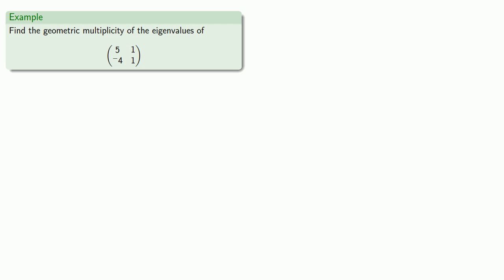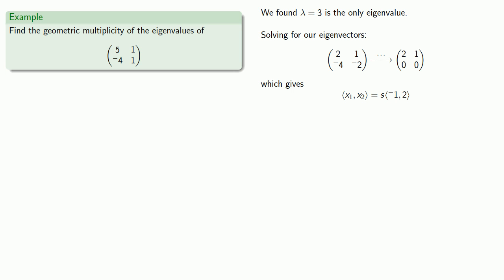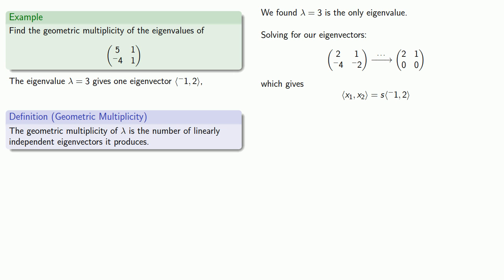Let's consider the geometric multiplicity of the eigenvalues of our matrix. We found lambda equals 3 is the only eigenvalue. Solving for our eigenvectors gives us, in parameterized form, the eigenvector s times (-1, 2). Or if we let s equal 1, we have the single eigenvector (-1, 2). This eigenvalue lambda equals 3 gives us one eigenvector, so its geometric multiplicity is 1.